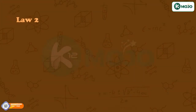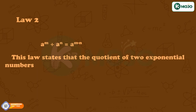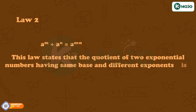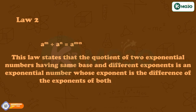Law two: a raised to the power m divided by a raised to the power n is equal to a raised to the power m minus n. This law states that the quotient of two exponential numbers having the same base and different exponents is an exponential number whose exponent is the difference of the exponents of both the numbers.